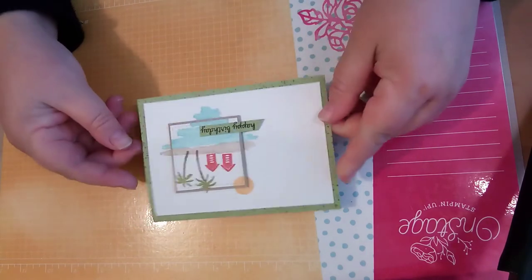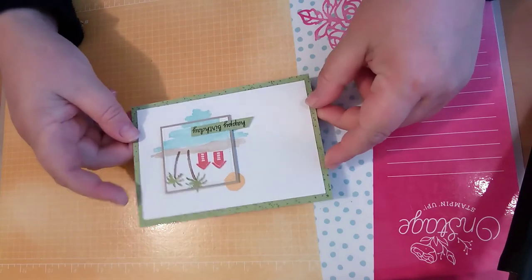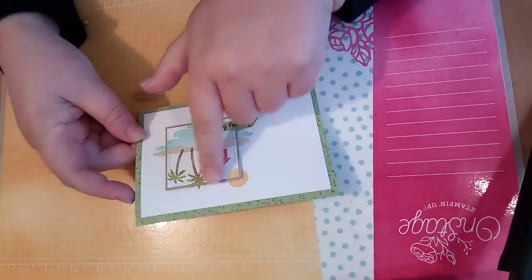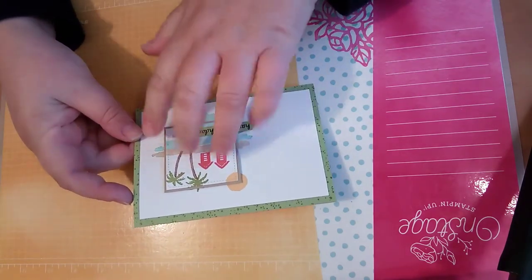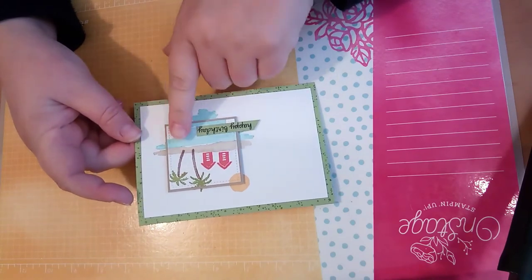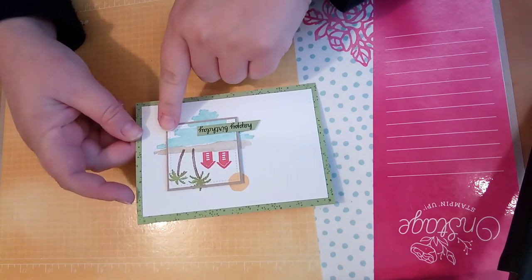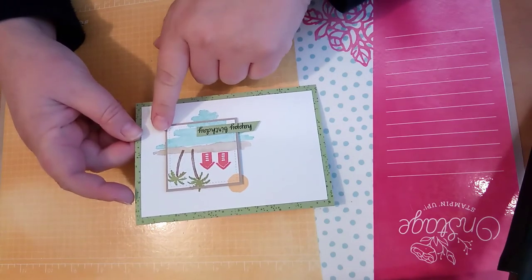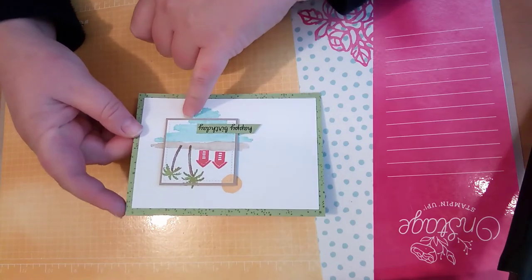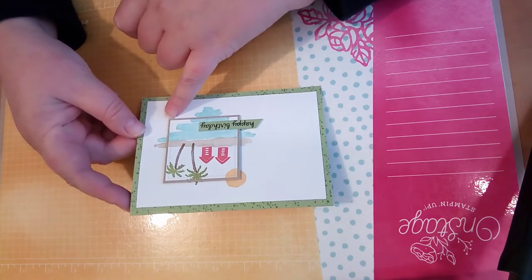Here it is, featuring the spotlight technique. So that is where you focus on one part of imagery or gorgeous DSP paper and make it the focal point. In this card we will be doing that today by popping it up with a bit of a cardstock layer.